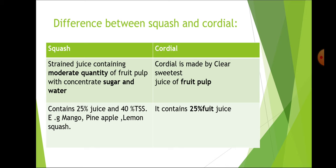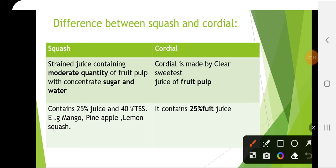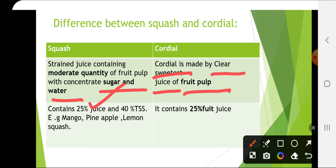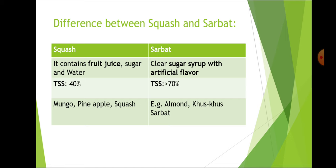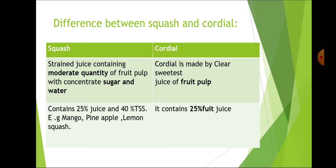Difference between squash and cordial: Squash is a strained juice containing moderate quantity of fruit pulp with concentrated sugar and water — it contains 25% juice and 40% TSS; examples are mango, pineapple and lemon squash. Cordial is made from clear, strained juice of fruit pulp and also contains 25% fruit juice. Difference between squash and sharbat: Squash contains fruit juice, sugar and water with 40% TSS, while sharbat contains clear sugar syrup with artificial flavor and more than 70% TSS. Squash is made from mango and pineapple; sharbat is made from almond and khus khus.